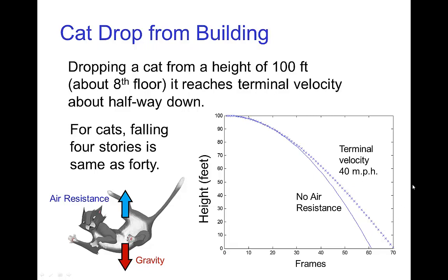So you see that it doesn't matter whether the cat falls out of a fourth floor window or a fortieth floor window, because it reaches terminal velocity. After about fifty feet, it just continues traveling at constant speed until it reaches the ground.